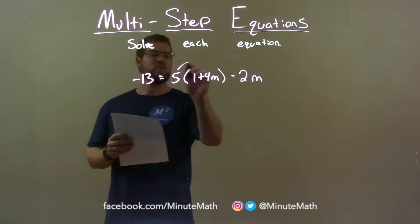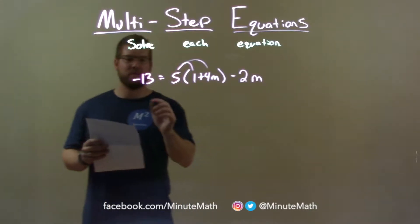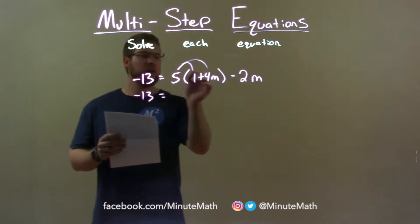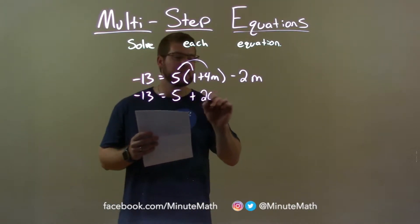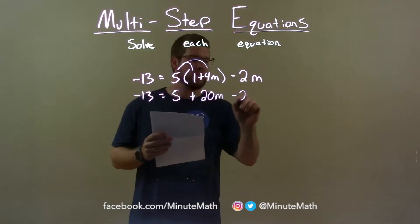First thing I want to do is distribute the 5 into that parenthesis there. So negative 13 equals 5 times 1 is 5 and 5 times 4m is 20m, bringing down the minus 2m.